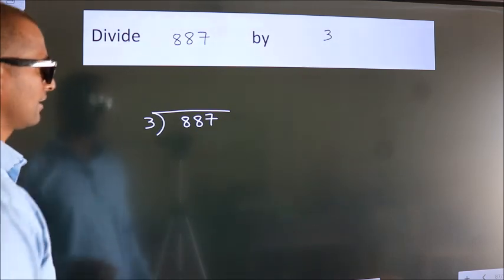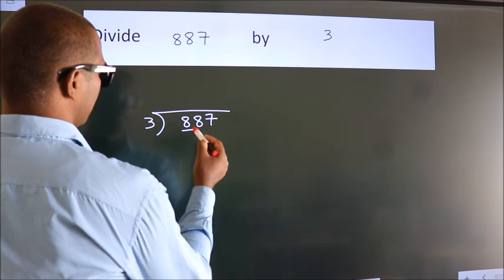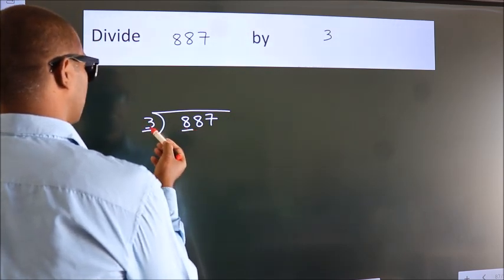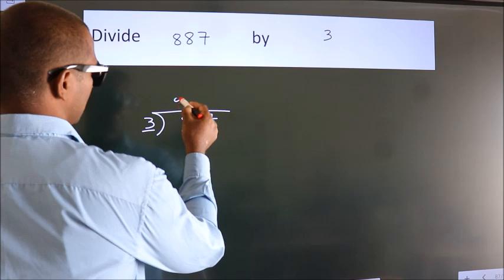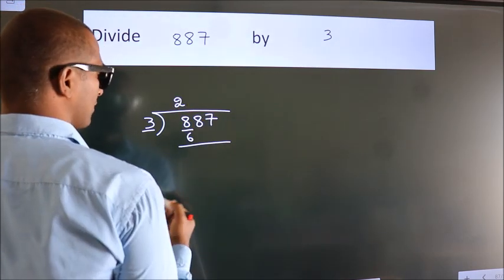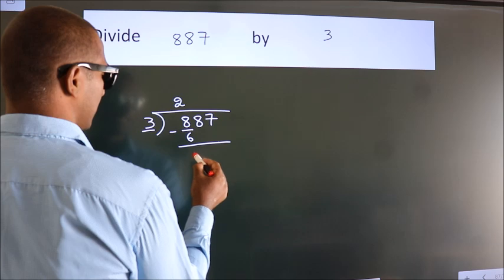Next. Here we have 8, here 3. A number close to 8 in 3 table is 3 times 2 is 6. Now we should subtract. We get 2.